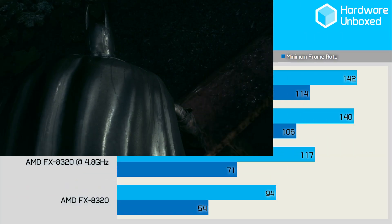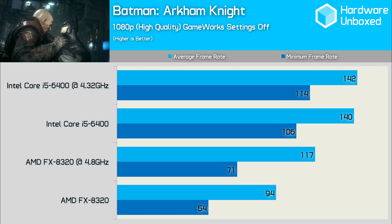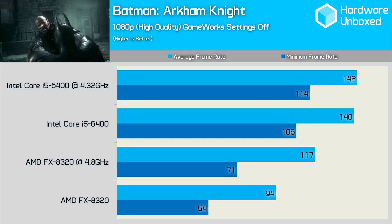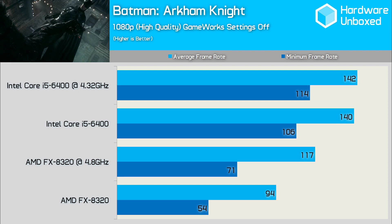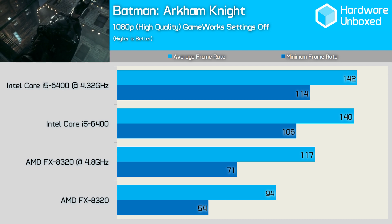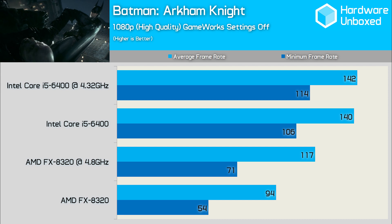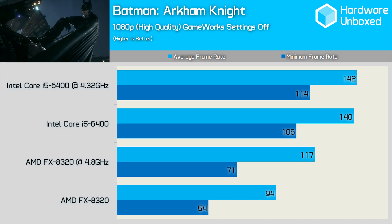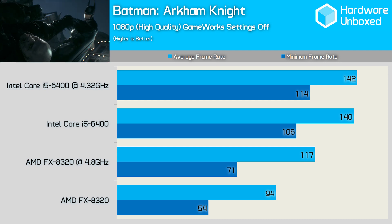Batman Arkham Knight is clearly a CPU intensive title, and as a result the stock FX8320 looks quite weak when compared to the Core i5-6400, despite delivering a very playable average frame rate. Even the minimum 54fps is acceptable, although when compared to the 106fps of the 6400, the 50% reduction in performance is quite shocking. Overclocking the FX8320 helps to minimise the damage, as the minimum frame rate is bolstered by 30% to 71fps.